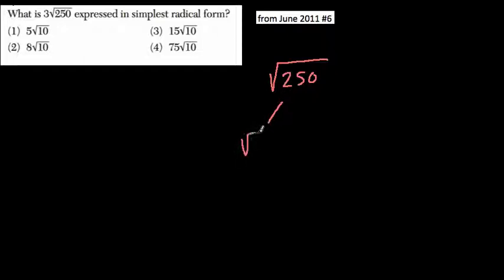I'm going to break it up into two factors. I see radical 25 times radical 10. And here I'm just using this property that you can break up the square root of a number into the square root of its factors. So I know 25 times 10 is 250. This also means that the square root of 25 times the square root of 10 is the square root of 250.